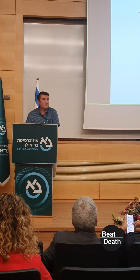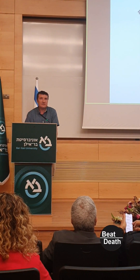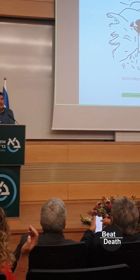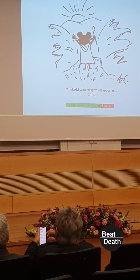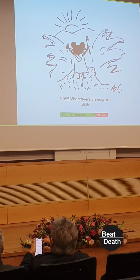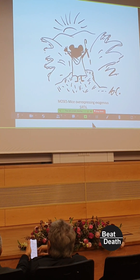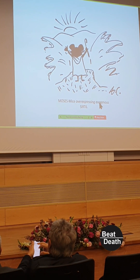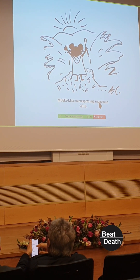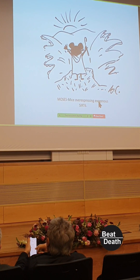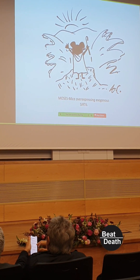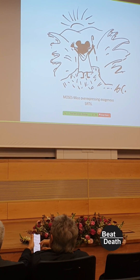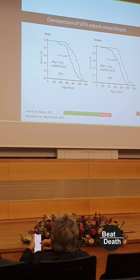We decided to follow what happens when you overexpress SIRT6 in mice with respect to metabolism and aging. The way we did it, we generated a mouse line called MOSES — Mice Overexpressing an eXogenous SIRT6. It's a transgenic mouse that has higher levels of SIRT6, exactly like in calorie restriction. We then began to investigate what happens with these mice.